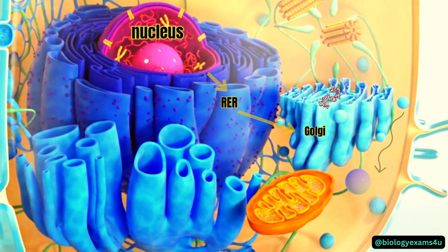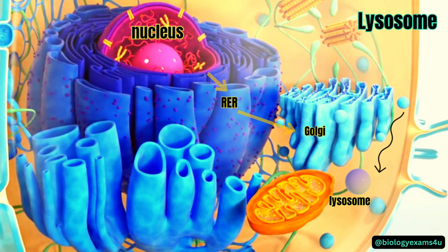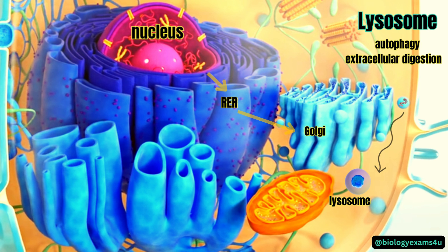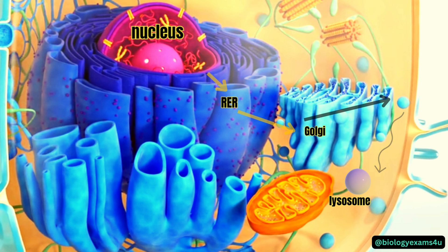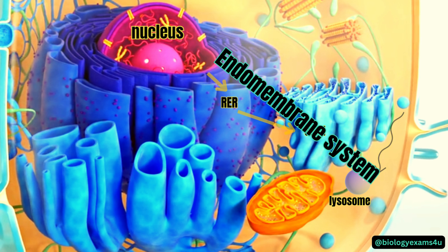The next organelle connected with the RER–Golgi system is the lysosome. Lysosomes are single membrane-bound sacs of digestive enzymes that break down old and damaged cell parts in a process called autophagy, and are also involved in extracellular digestion of bacteria or other pathogens taken inside the cell. From the nuclear membrane, there is a continuous membranous connection to RER, then to the Golgi apparatus and lysosomes — together forming the endomembrane system of the cell.